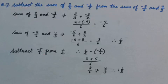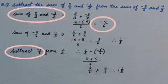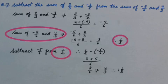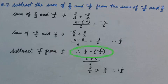Then we have to subtract the sum of 2 upon 3 and minus 3 upon 2, that is minus 5 upon 6, from the sum of minus 5 upon 6 and 4 upon 3. That is 1 upon 2. When we subtract it, it is 1 upon 2 minus minus 5 upon 6.